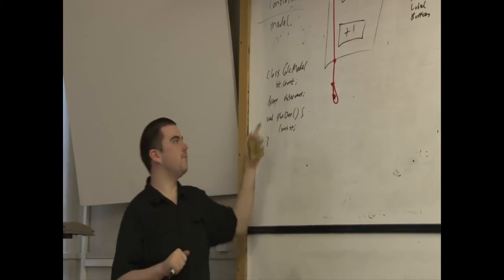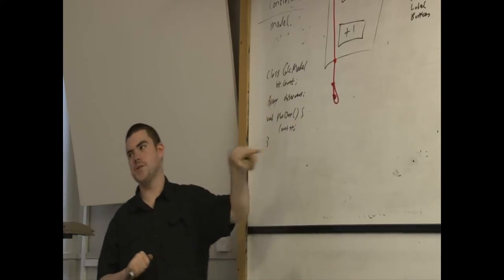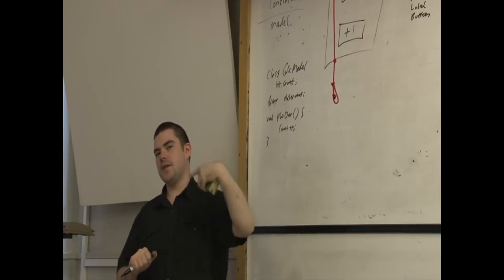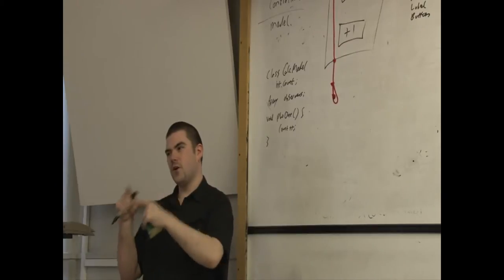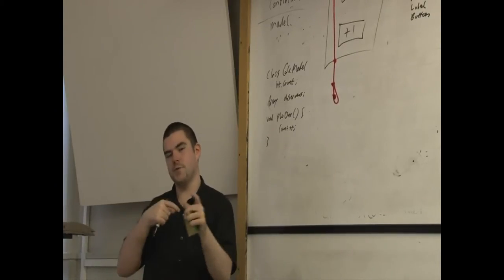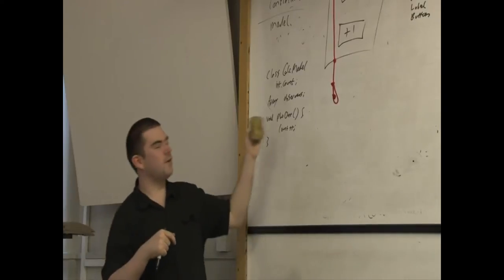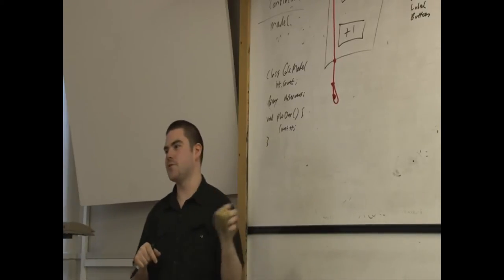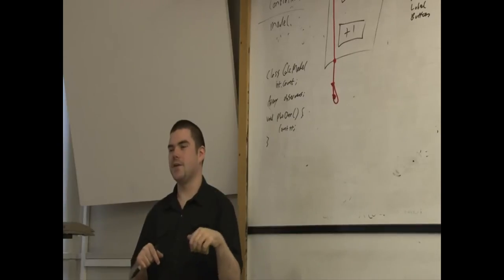And basically every time, we're going to put in the thing that every time the count changes, it'll update all observers that have registered interest. And that's kind of a nice way of keeping it indirect as well because the model will be unaware of who these observers really are. It'll just know that they want to be updated on it.